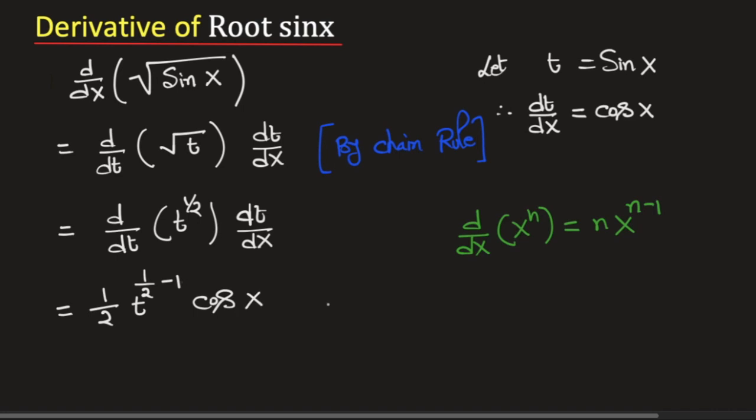Look that half minus 1 which is negative half. So we will have t to the power negative half divided by 2 and then we have cosine x.